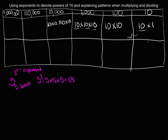Now let's look at our place value chart. When we have 10, the base is 10 and we're multiplying it once — so it's 10 to the first power. For 100, the base is 10 and we have two factors of 10, so it's 10 to the second power, or 10 squared. For 1,000, it's 10 to the third power — 10 times 10 times 10. Every time we multiply by another 10, the exponent increases by 1, and we want students to see this pattern.